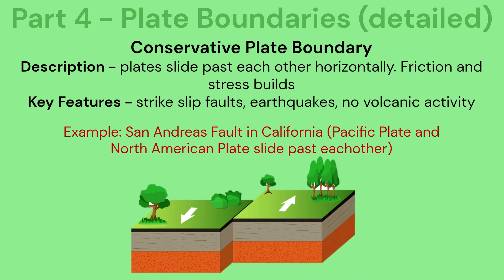Conservative plate boundary: two plates slide past each other horizontally. As a result, friction and stress builds. Key features include strike-slip faults and earthquakes, but no volcanic activity.